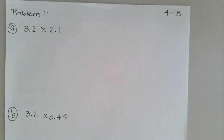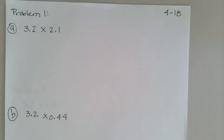Hi, welcome. This is Module 4, Lesson 18 of Engage New York. Our objective is the same as Lesson 17. We are relating decimal and fraction multiplication, and we're looking for how they are similar — how you can look at both, knowing that a fraction is a decimal and a decimal is a fraction. That's the big idea.